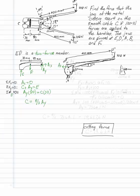So A, X was to the right, now A, X is to the left. A, Y was up, now A, Y is down. They have to be equal and opposite.